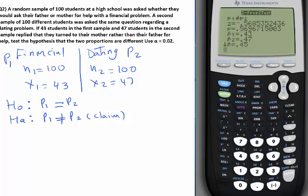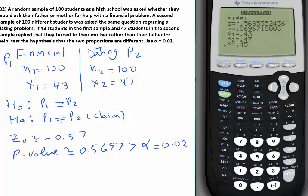And here we go. Z0 is negative 0.57. P value is about 0.5697. Always put four decimal digits for the P value. And as you can see this is more than alpha. Alpha is 0.02 here. So what's the decision? If P value is more than alpha, fail to reject H0.